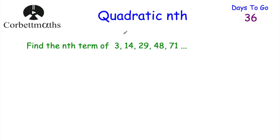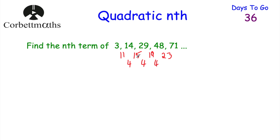We're going to find the nth term for the sequence 3, 14, 29, 48, and 71. The first step is to find the first differences — what the sequence is going up in. From 3 to 14 that's going up 11, from 14 to 29 that's going up 15, from 29 to 48 that's going up 19, and from 48 to 71 we're going up 23. Those are the first differences. Now to find the second differences, we find the differences between those — 4, 4, and 4 — which is fantastic, because for a quadratic nth term those second differences should all be the same.